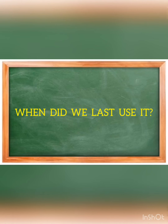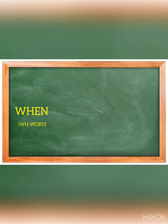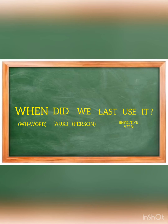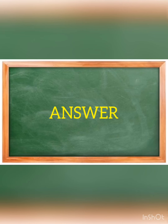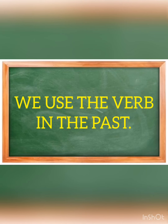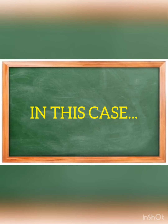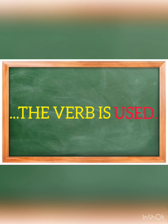In question number two — when did we last use it — the structure is the following: WH word, auxiliary DID, person we, and verb in the infinitive. But when we answer, we use the verb in the past. In this case, the verb is used.